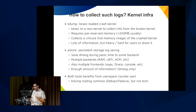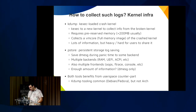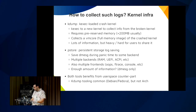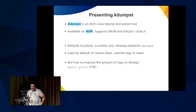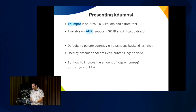Both kdump and pstore require a userspace counterpart — they are kernel mechanisms, but you need to set them up. For kdump you need a tool to read the vmcore, compress, filter, etc. Arch Linux does not have that like Debian or Fedora do. So we wrote one called kdumps — presenting kdumps here. It's an Arch Linux kdump and pstore tool, available in the Arch Linux user repository. It supports GRUB and some init systems, defaults to pstore, and currently only works with ramoops but we are implementing EFI.